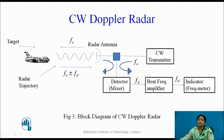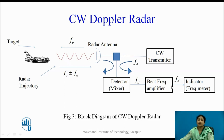The output fd is fed to the beat frequency amplifier. The function of the beat frequency amplifier is to eliminate signals received from stationary targets and pass only the echo signals from moving targets. It also amplifies those signals so they can be displayed on the indicator. The indicator is usually a frequency meter.